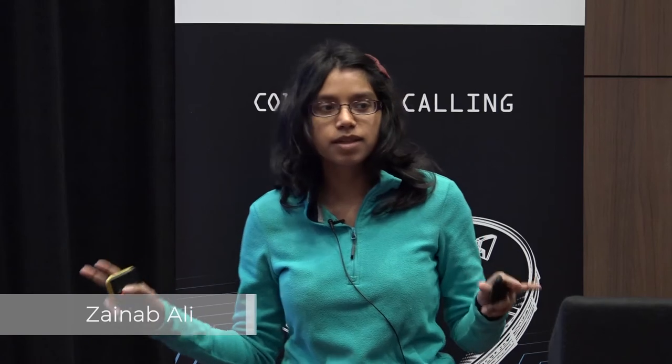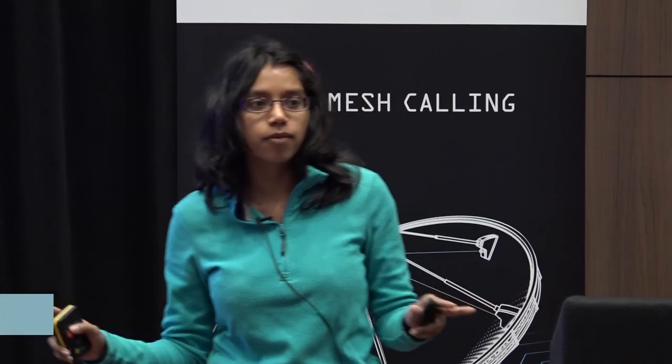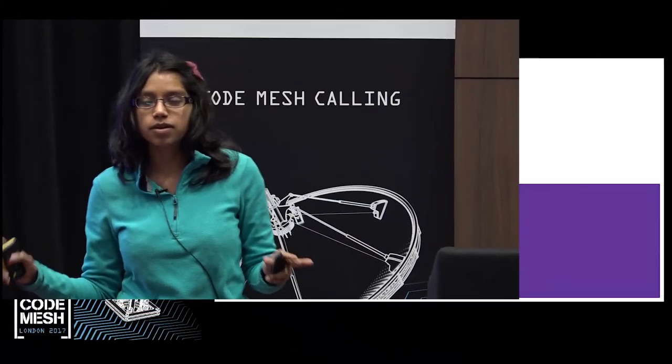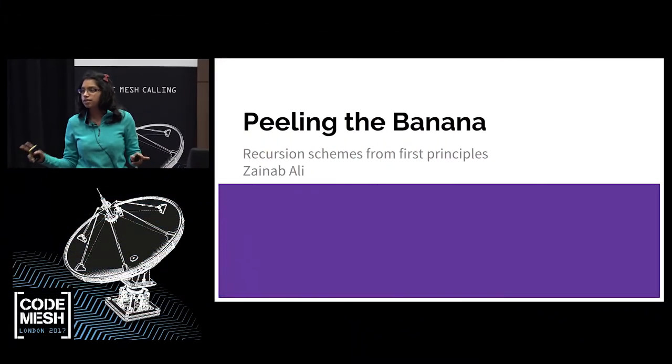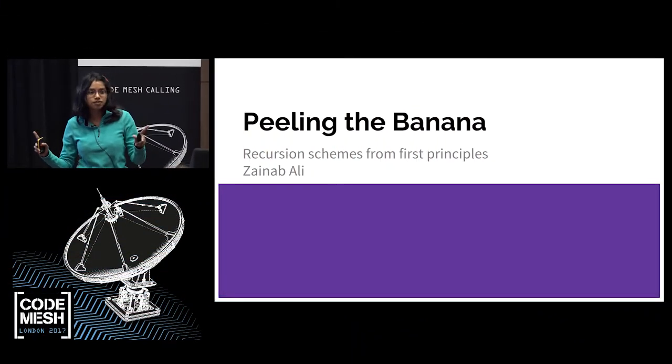I'm going to talk to you about peeling the banana. It's a bit obscure. First of all, I just want a show of hands: how many people actually know about the banana that we're going to peel? It's called a catamorphism.